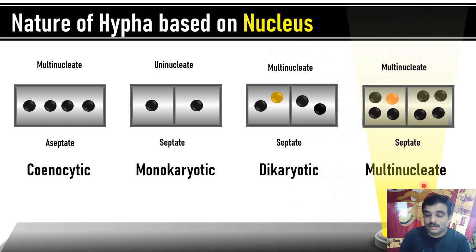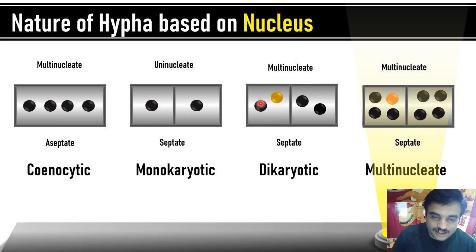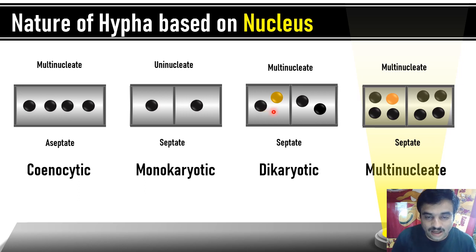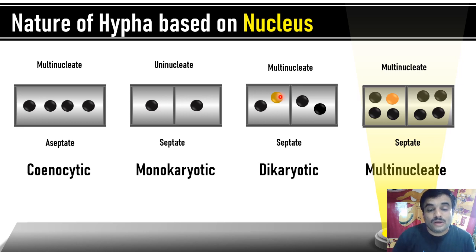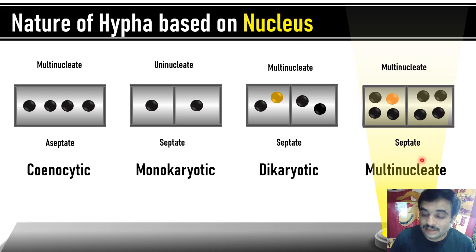As seen in the multi-nucleate condition, each individual compartment made by the septa will have more than two nuclei within it. One more thing to note is that there is a color code given to two different nuclei to represent that the DNA or nuclei present in these compartments are genetically different — these are called heterokaryotic hyphae. Where there is no such distinction, it is called homokaryotic hyphae, and this can be seen in both dikaryotic and multi-nucleate fungi.